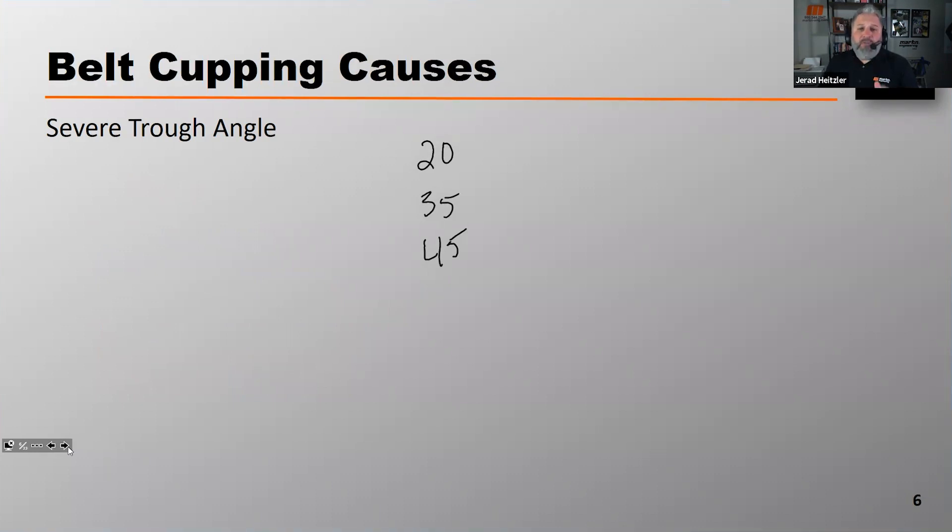So most belts are designed to trough at 35 degrees because that's the most common. Most of you are seeing or operating or working with conveyors that trough to 35 degrees. Therefore your belts are designed to trough to 35 degrees.